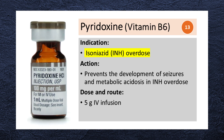Pyridoxine, or vitamin B6, is used as an antidote for isoniazid overdose. It prevents the development of seizures and metabolic acidosis. The recommended dose is 5 g administered slowly via direct intravenous infusion.